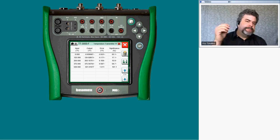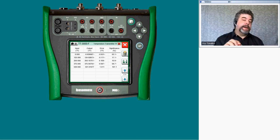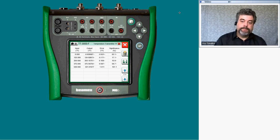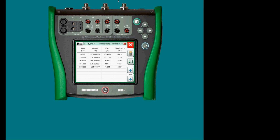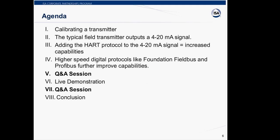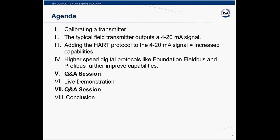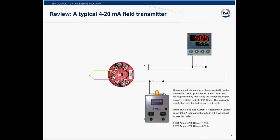Let me just pause here. I want Tom to come in and tell us a little bit about HART and Fieldbus before we come back and actually do the trimming on this. Obviously, no zero and span potentiometer is located on the smart transmitter. So we're going to do a quick review of standard 4 to 20 milliamp transmitters, and then move into HART and Foundation Fieldbus and Profibus PA transmitters. Nearly any process signal can be measured by these transmitters. In this example, the transmitter is measuring a thermocouple sensor.